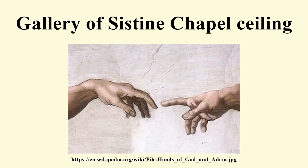The shields represent violent episodes in the history of Israel, including the death of Uriah and a detail of the idol of Baal.